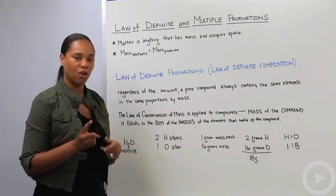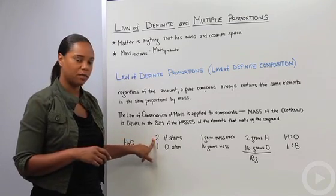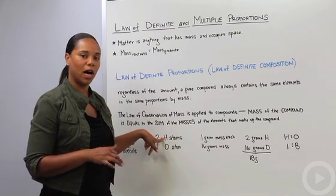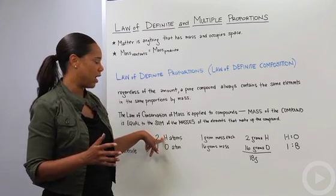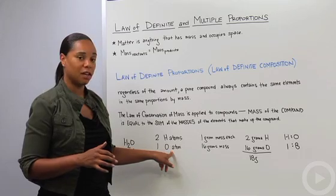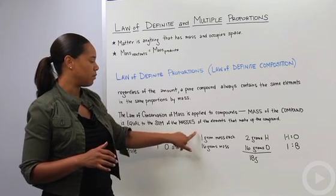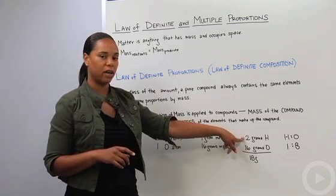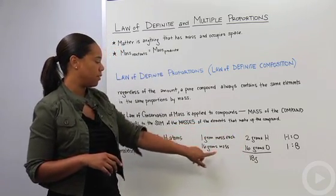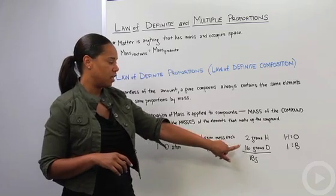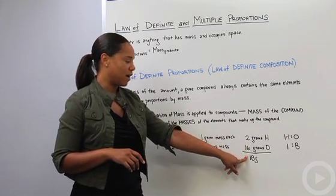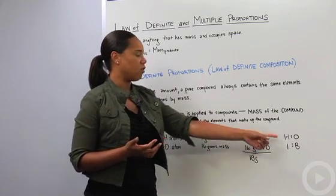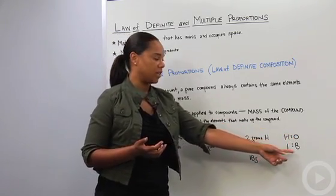If we have one water molecule, it's composed of two hydrogen atoms and one oxygen atom. If we recall from the periodic table, hydrogen weighs about 1.008 grams, oxygen weighs about 16 grams. If we have two hydrogen atoms, that means the mass is one gram each, so we have a total of two grams of hydrogen. We have one oxygen atom with a mass of 16 grams. That means the molar mass of water is 18 grams. The ratio of hydrogen to oxygen is then one to eight.